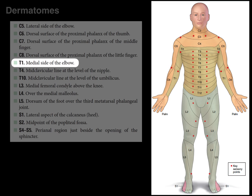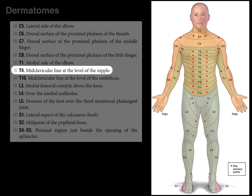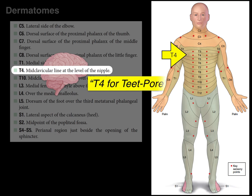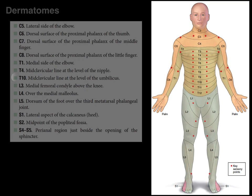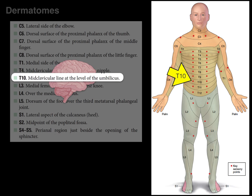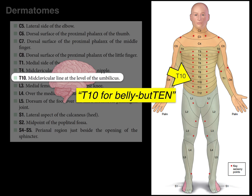To test the T1 dermatome, touch the medial side of the elbow, the skin overlying the medial epicondyle of the humerus. The T4 dermatome is tested by the skin at the midclavicular line at the level of the nipple — I remember this as 'T4 for teat-four,' it rhymes. The T10 dermatome is tested at the midclavicular line at the level of the umbilicus — I remember this as 'T10 for belly-button ten,' it rhymes.